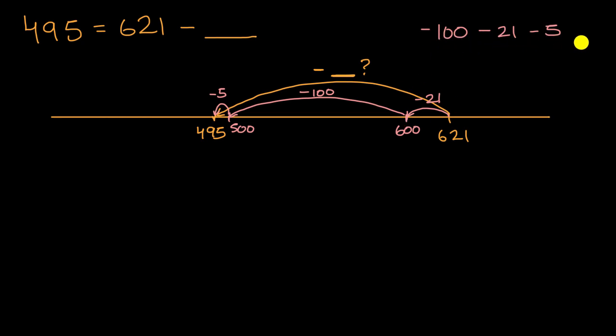And so how much did I subtract in total? So let me just put it this way, this is the same thing as 621 minus these things. That's equal to 495. So in total, if I subtract 21 and I subtract 5, that is subtracting 26. And so I subtract 126. So 495 is equal to 621 minus 126.